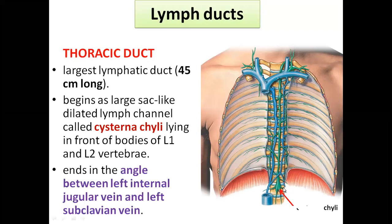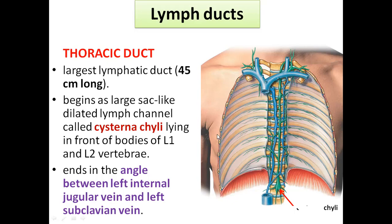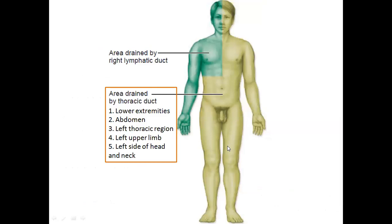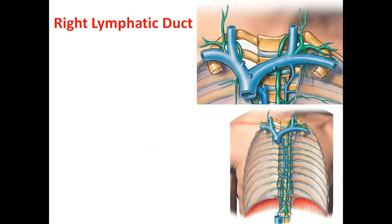The thoracic duct ends between two veins: the left internal jugular vein and the left subclavian vein, opening at their junction. The area drained by the thoracic duct includes the two lower limbs, external genitalia, inguinal region, whole abdomen, the left upper limb, left part of the thorax, and the left half of the head and neck region. The rest is drained by another duct called the right lymphatic duct.